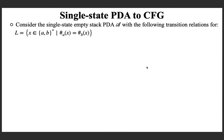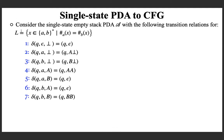Consider the single-state pushdown automaton with the following transitions for the language of strings over AB with equal number of A's and B's. Here are the transitions. Q is the only state in this single-state automaton. Note that our purpose here is to understand how the given machine can be systematically converted into a context-free grammar. Please take it from me that this is one of the correct pushdown automations for this language.